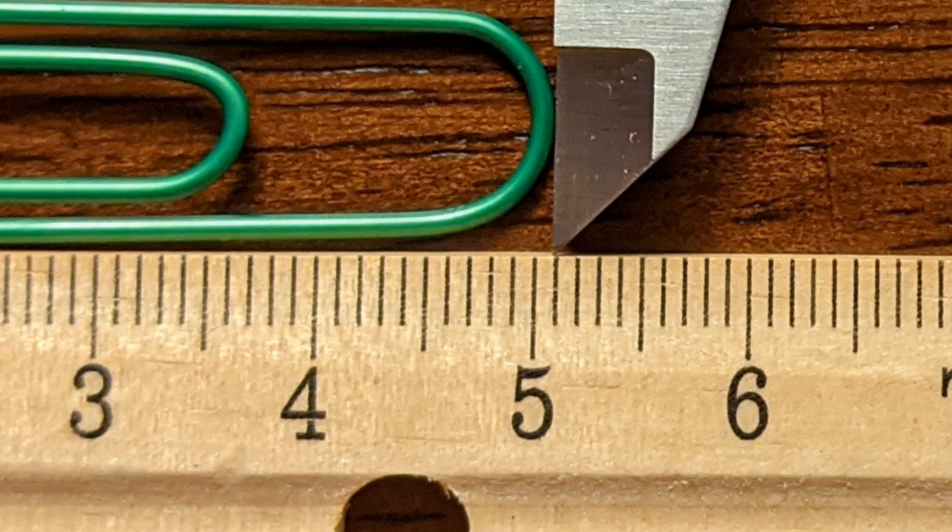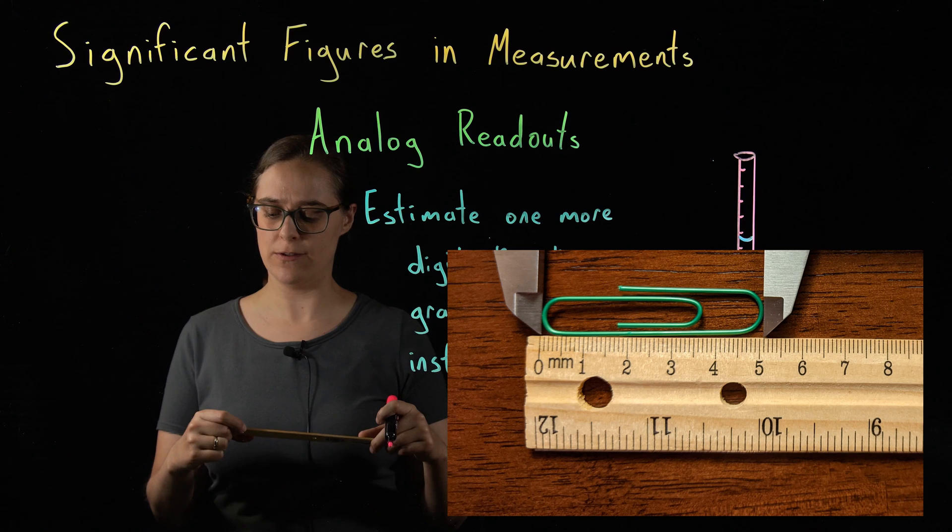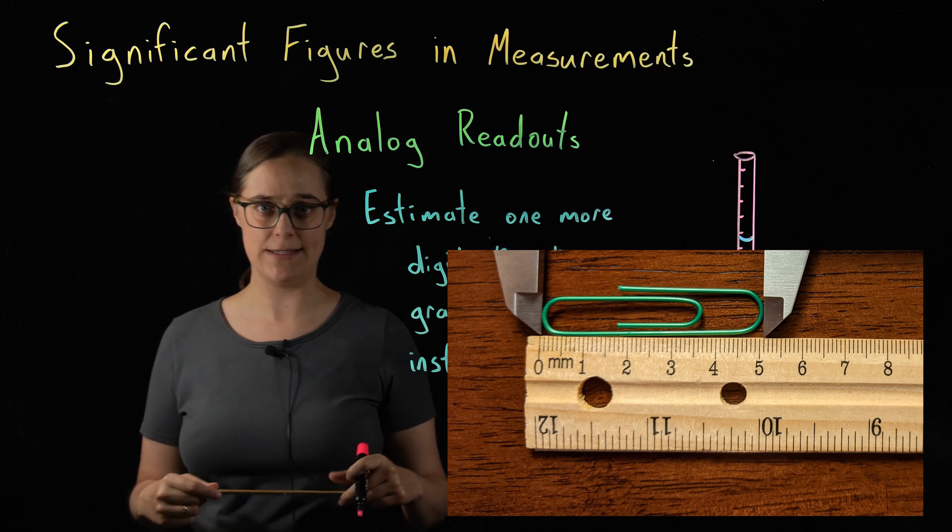My estimate might be slightly different than yours. That's why we always assume that that last digit is plus or minus 1. But for the length of this paperclip, I am going to record a length of 5.07 centimeters.